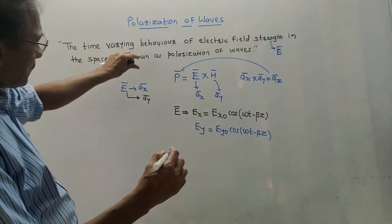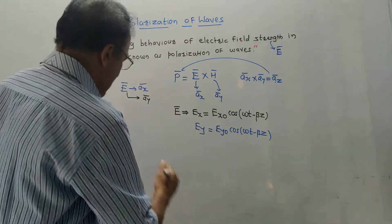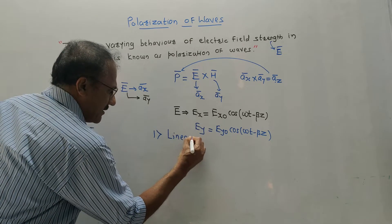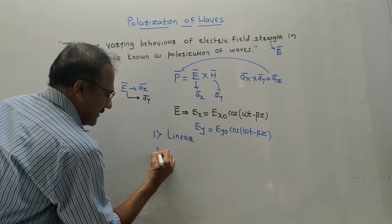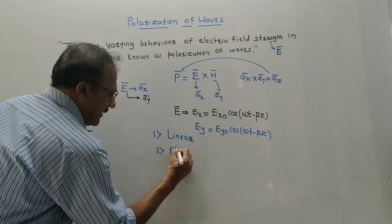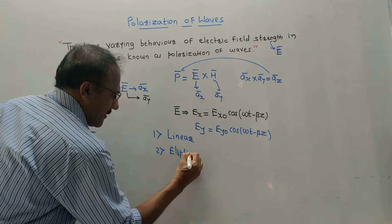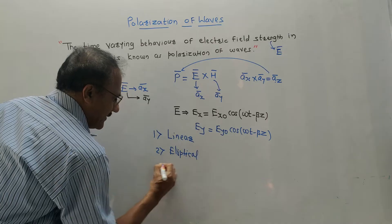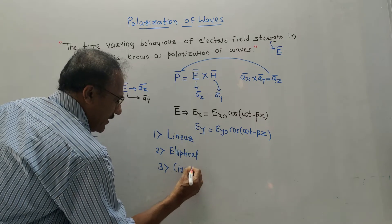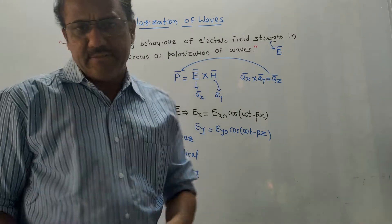As far as polarization is concerned, there are three types: first, linear polarization; second, elliptical polarization; and third, circular polarization. We will discuss each type in detail.